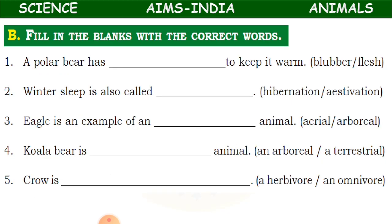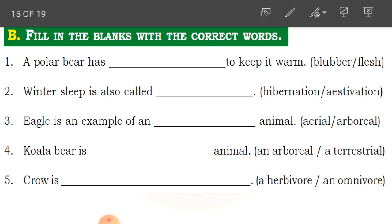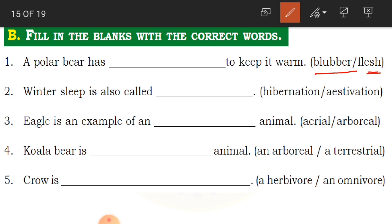Section B - Fill in the blanks. First blank: A polar bear has dash to keep it warm. The answer is blubber - the fat under the skin - which keeps it warm. Second blank: Winter sleep is also called hibernation or estivation. The answer is hibernation - winter sleep is called hibernation.